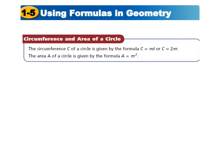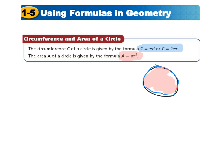The circumference C of a circle is given by C equals pi times D (the diameter), or equivalently C equals 2 pi times the radius. The area A of a circle is pi R squared. The circumference is the outside of the circle and the area is everything in the middle. So the formula for circumference is 2piR and the area is piR squared.